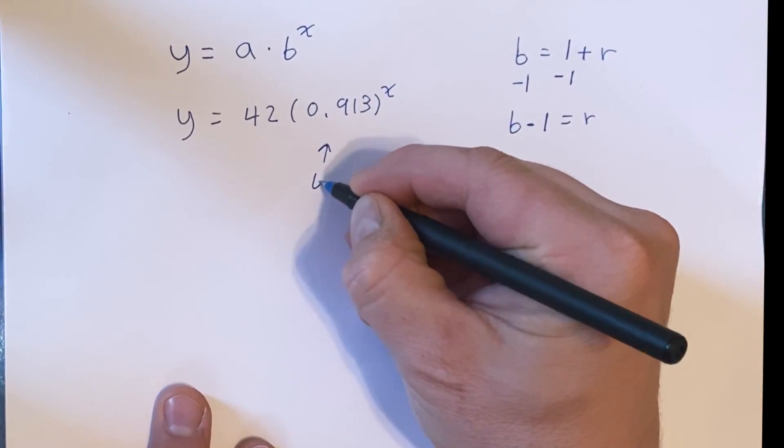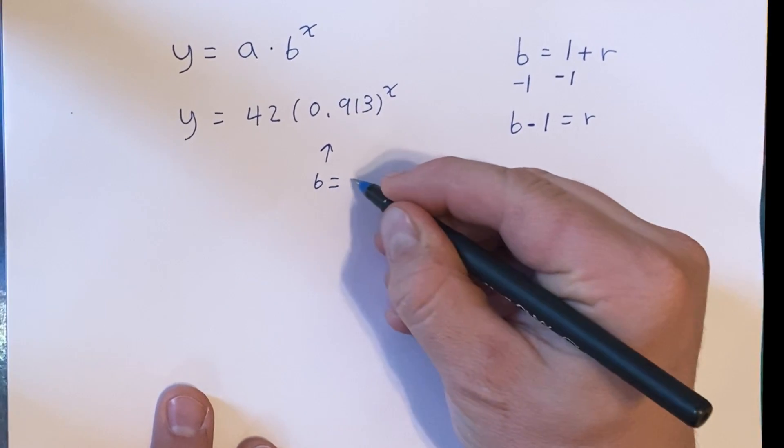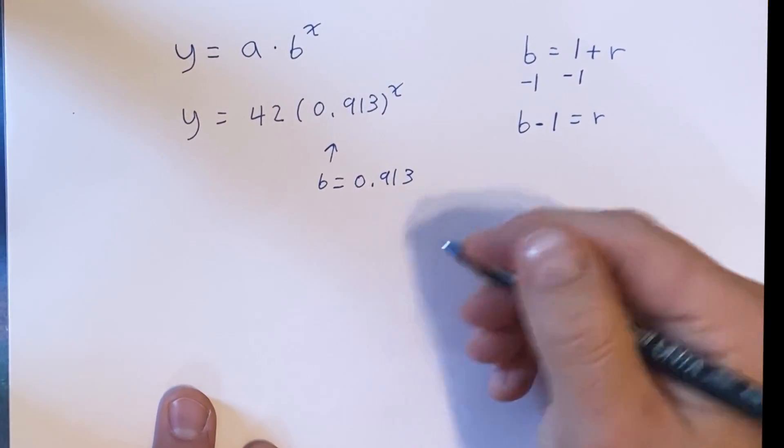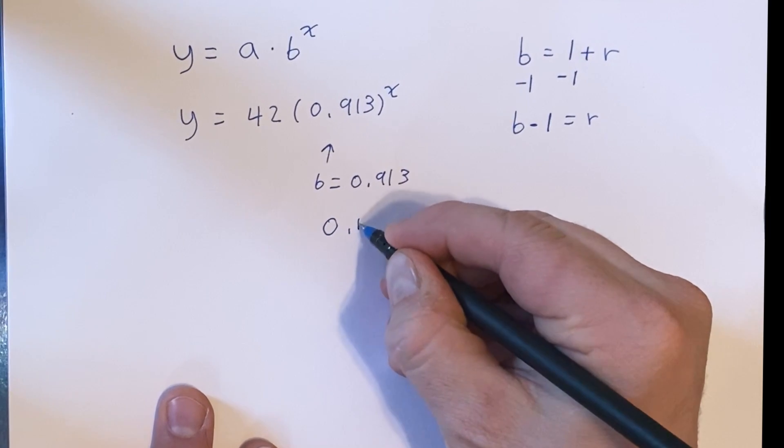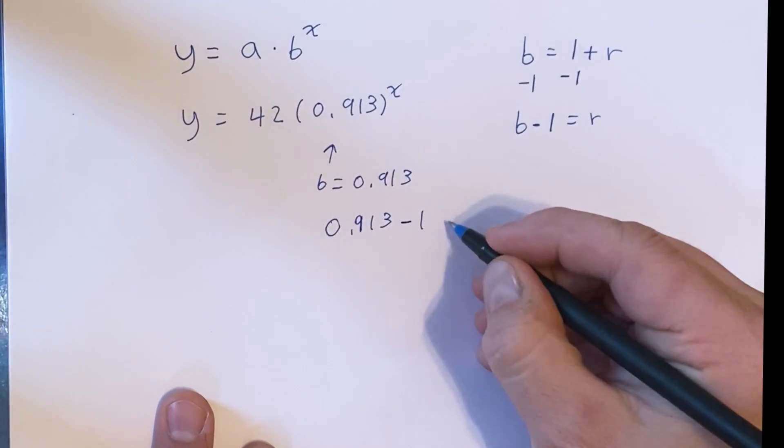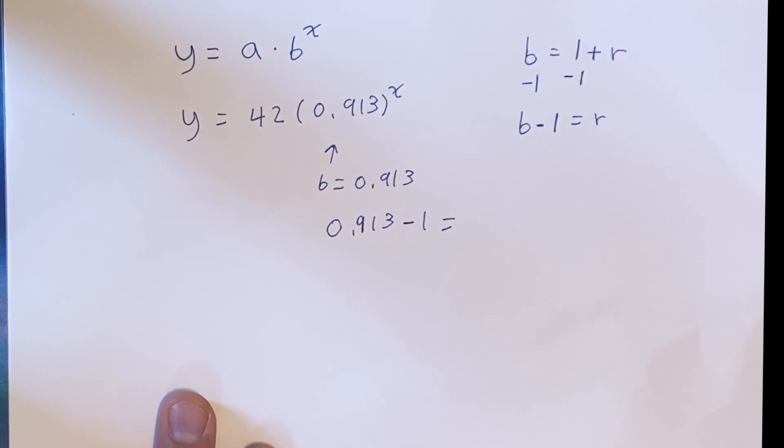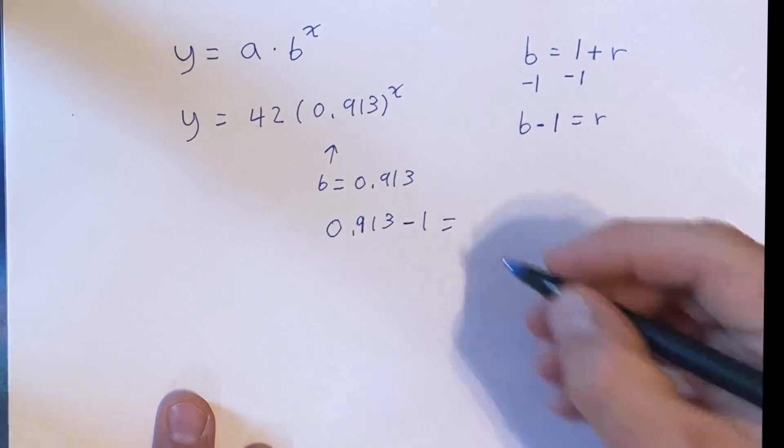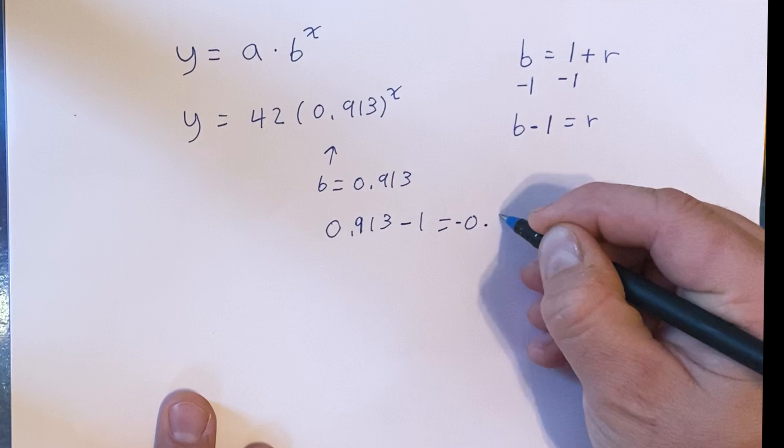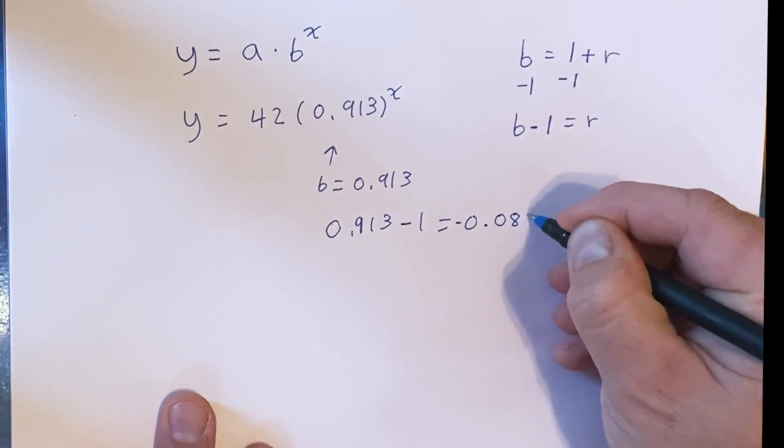So this is our b. B equals 0.913. So we take that, 0.913, and we subtract 1. And when we do that, we're going to get a negative number. It's going to be negative 0.087.